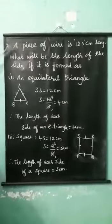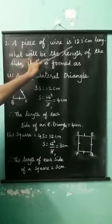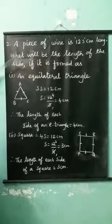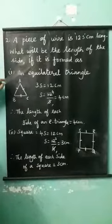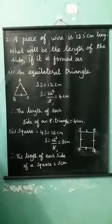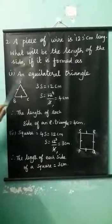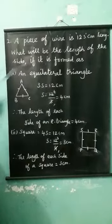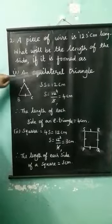Students, see the next sum. A piece of wire is 12 cm long. What will be the length of the side if it is formed as first one, an equilateral triangle, next one, square. First we see the equilateral triangle.